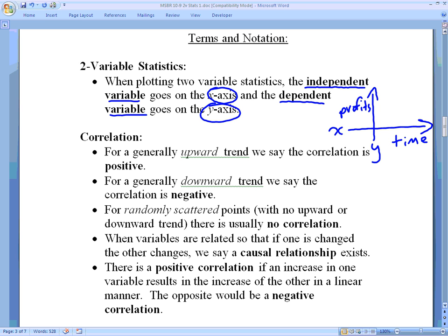For a generally upward trend, we say the correlation is positive. Upward meaning that the graph is going up, something like that. For downward trend, we say the correlation is negative.